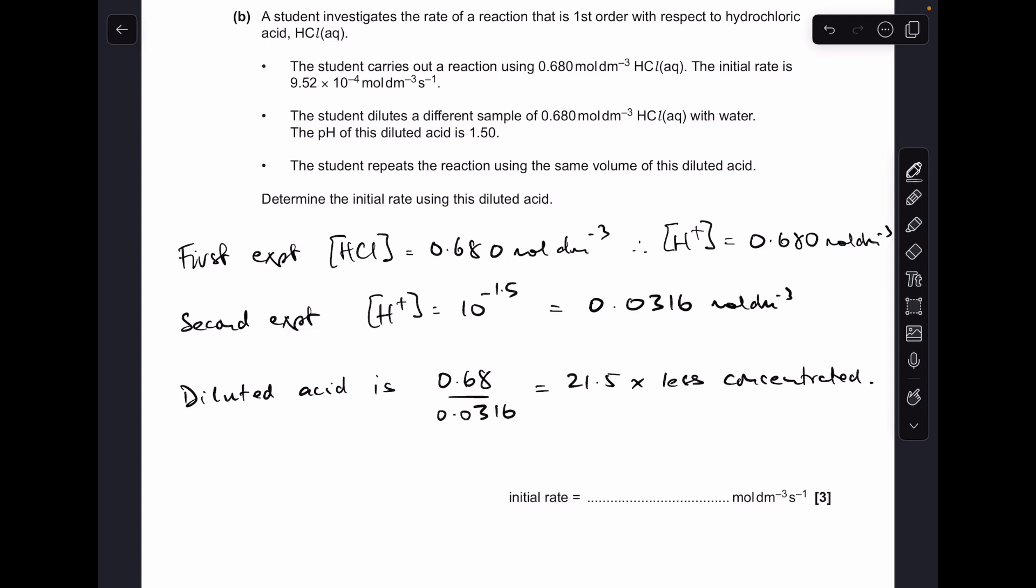So what we've got to do now is work out the factor, the dilution factor, for the new acid. So we just put the original concentration over the new one, so you can see that that's 21.5 times less concentrated in the second experiment. Because it's first order, we just need to divide the original rate by 21.5. So the initial rate for the diluted acid is 4.43 times 10 to the minus 5 moles per decimeter cube per second.